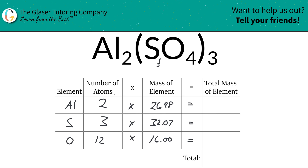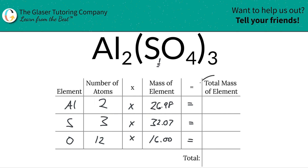Next, we're going to multiply across each row to find the total mass of each element in the compound. When we take 2 and multiply it by 26.98, we get the total amount of aluminum: 53.96. For sulfur, when we multiply, we find the total is about 96.21. And for oxygen, we take 12 and multiply it by 16, which works out to be about 192.